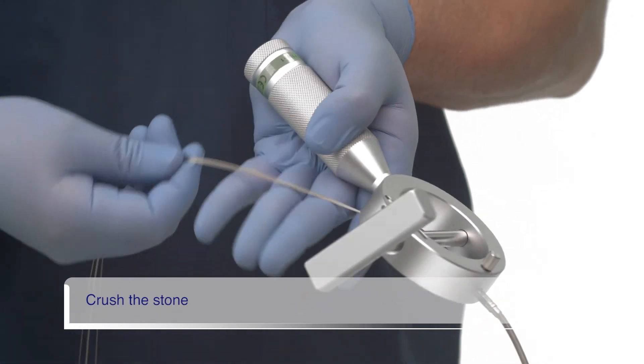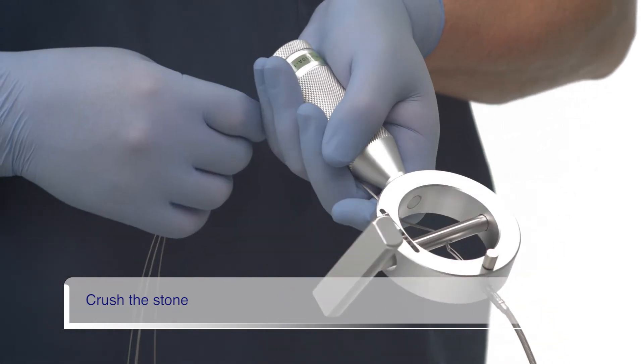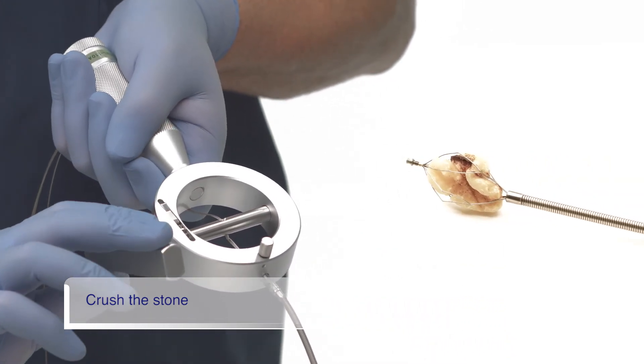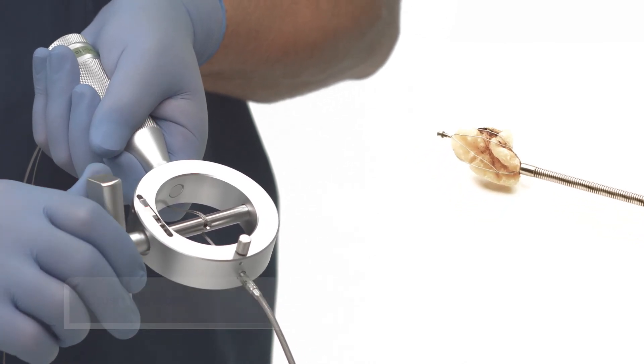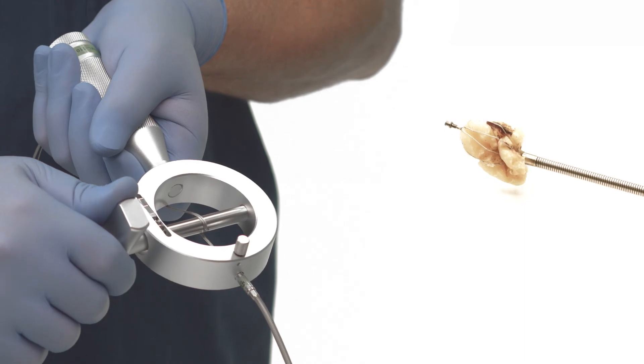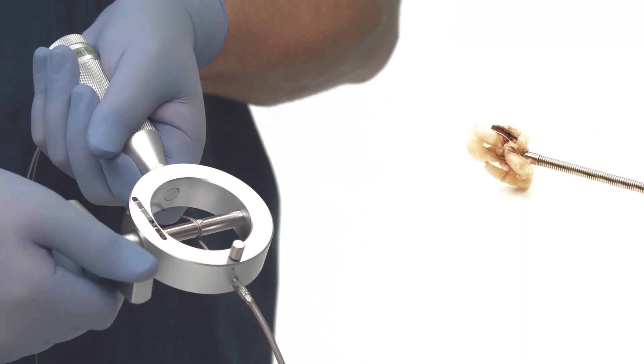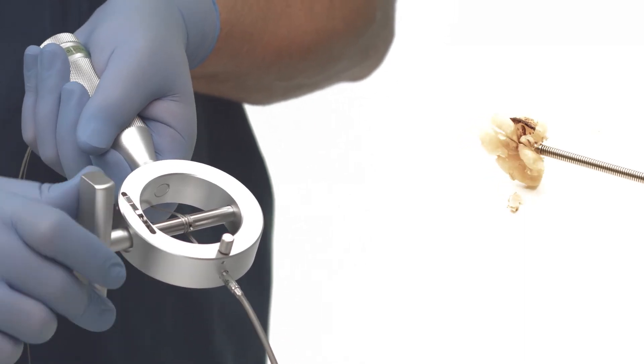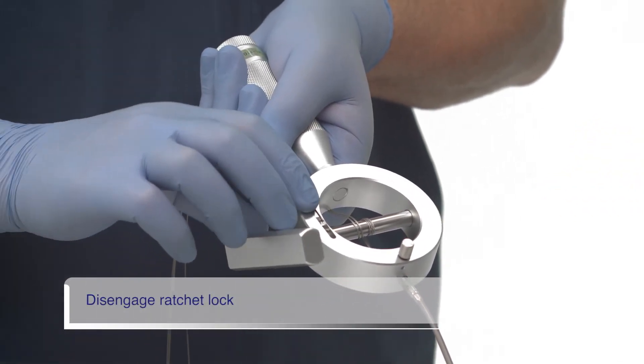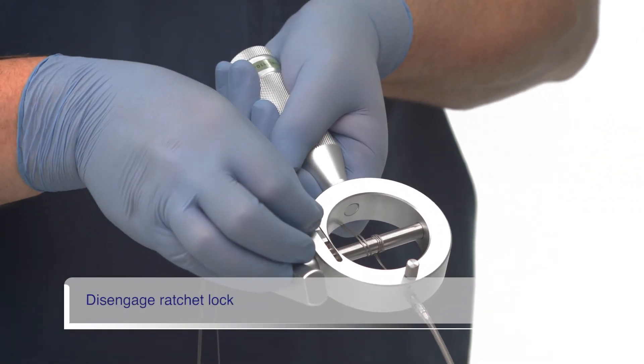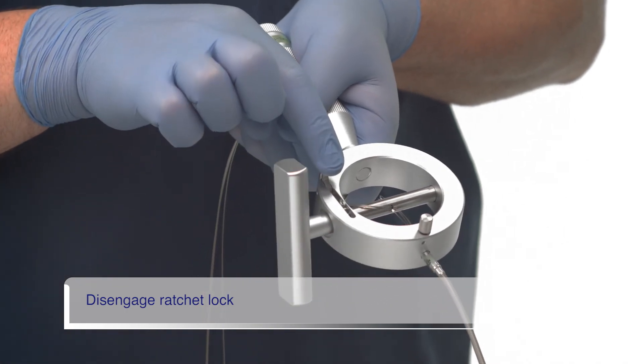While holding the wires against the handle with your left hand, slowly turn the rotatable bar with your right hand to crush the stone. Once the stone is crushed or the basket is broken, ensure that you relieve the tension in the coil sheath by disengaging the ratchet prior to removing from the patient.